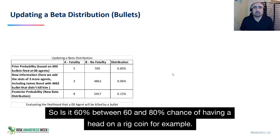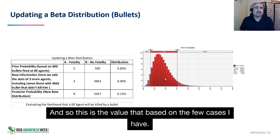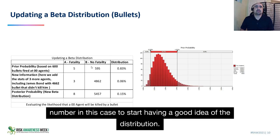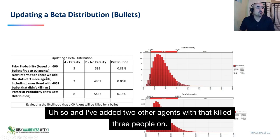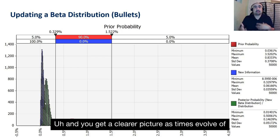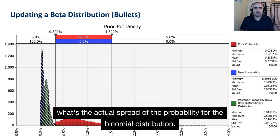This is the value based on the few cases I have, but this is relatively narrow because 600 is not a bad sample size to start having a good idea of the distribution. I've added two other agents with that, and you get a clearer picture as time evolves of what the actual spread of the probability is for the binomial distribution.